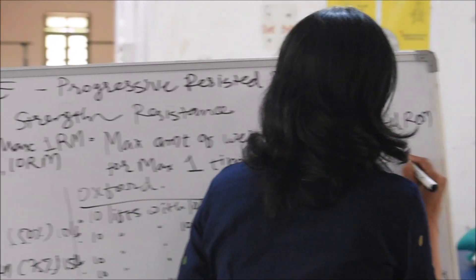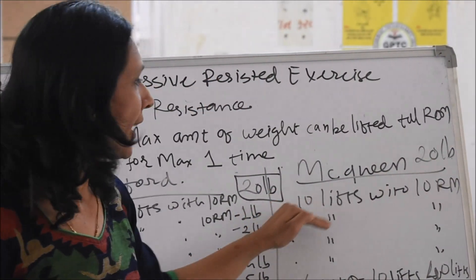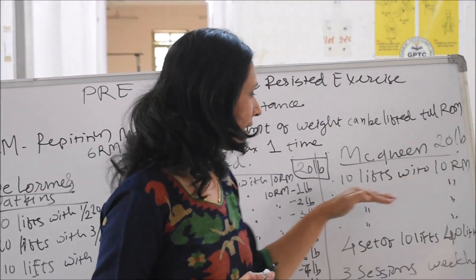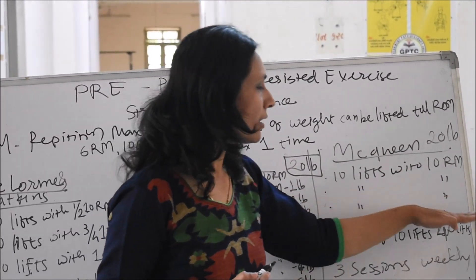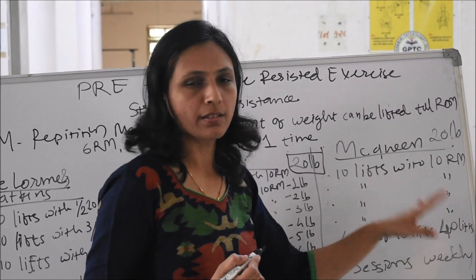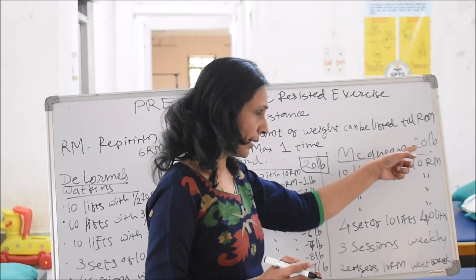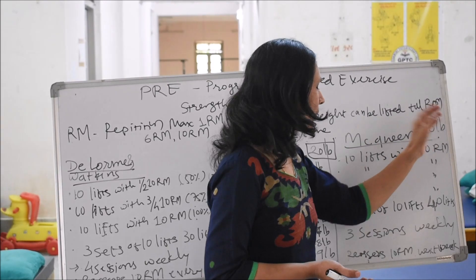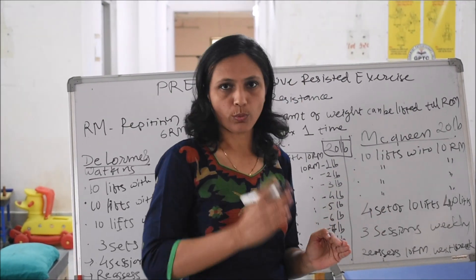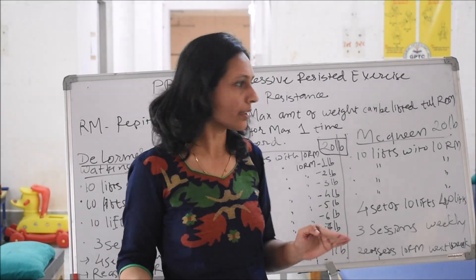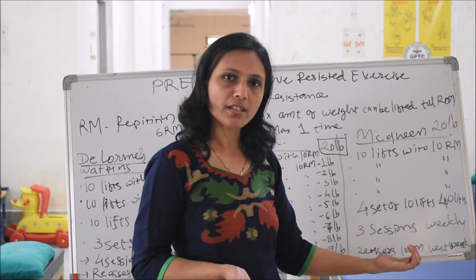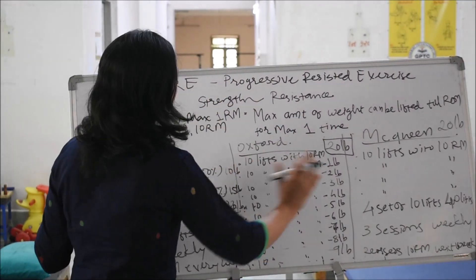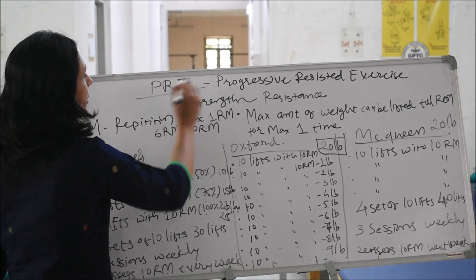Using the same example of 20 pounds as 10RM: the patient does 10 lifts with 20 pounds, again 10 lifts with 20 pounds, again 10 lifts with 20 pounds, and again 10 lifts with 20 pounds — 4 sets of 10 making 40 repetitions. This is done over 3 sessions in a week, and in the next week the 10RM is reassessed. So these are the three techniques used in progressive resistance exercise.